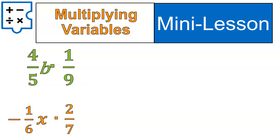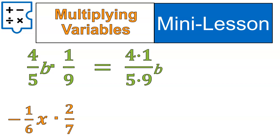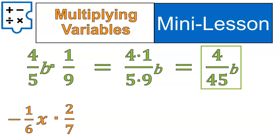Now let's talk about variables. If you have a variable in your question, like four-fifths b times one-ninth, the variable is the letter b. When you have a variable and you're multiplying fractions, you just write the variable down at the end. Because really, this is four over five times b times one over nine — multiply those fractions and leave the b. So b carries on with us: numerator times numerator, denominator times denominator, and that b stays at the end. Four times one is four, five times nine is 45, giving four forty-fifths b.